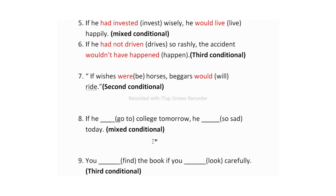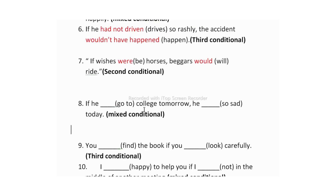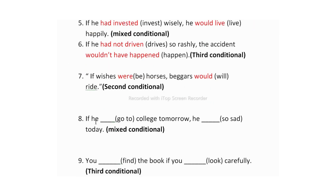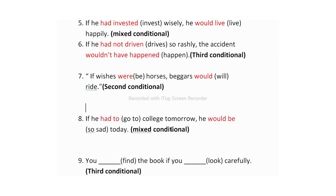The eighth one is: 'If he dash go to college tomorrow, he dash so sad.' You have to write mixed conditional. I have chosen second conditional: if + past simple + would + V1. Answer: 'If he had to go to college tomorrow, he would be so sad today' — along with 'would' we use V1, so we use 'be' here.